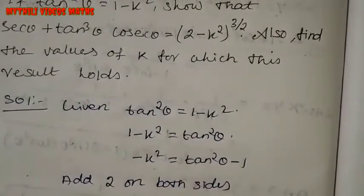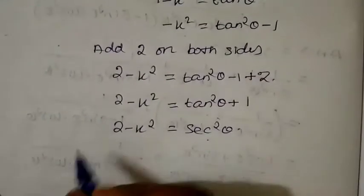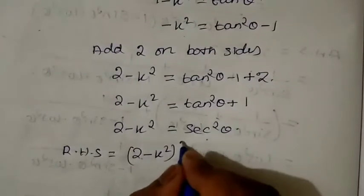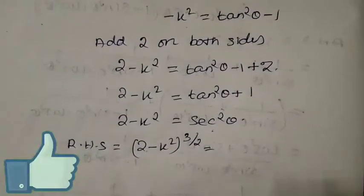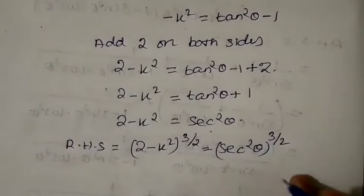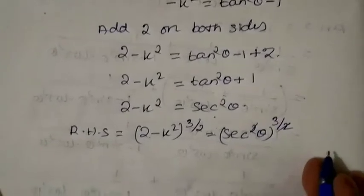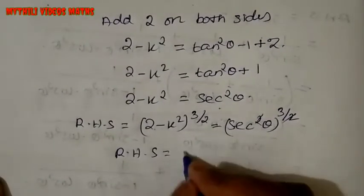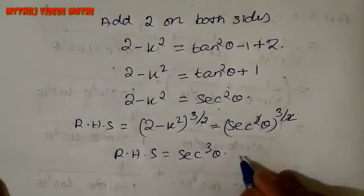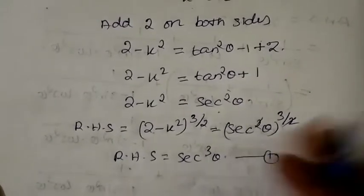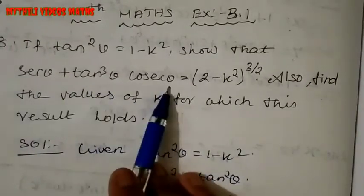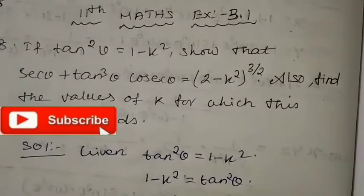So 2 minus k squared, raised to the power 3 by 2, equals the RHS. So the RHS is equal to secant cube theta. Using result 1, RHS equals secant theta plus tan cube theta into cosecant theta. We need to check that these are equal to secant cube theta.